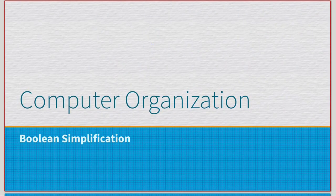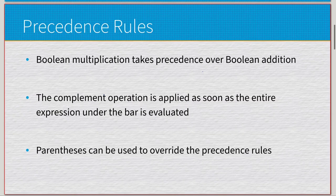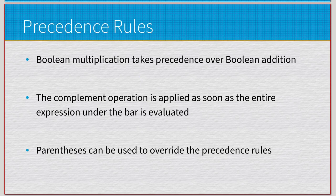Before we can get to Boolean simplification, we need to discuss the order of operations in Boolean algebra. We have multiplication, addition, and complement. Multiplication, just like standard algebra, takes precedence over addition. For complement, it's going to be applied as soon as the entire expression under the bar is evaluated.